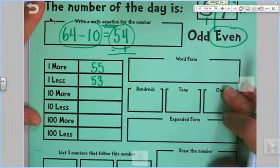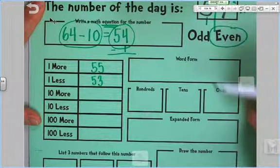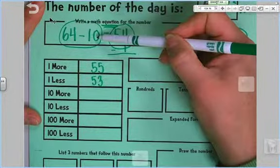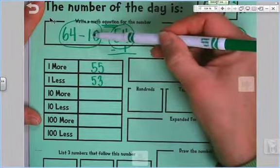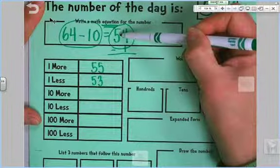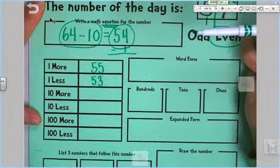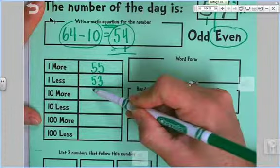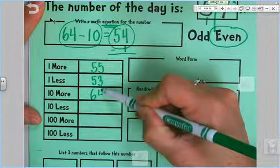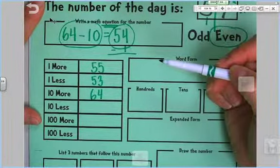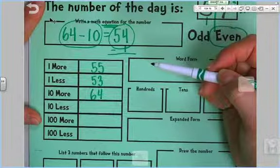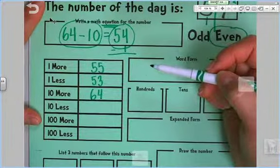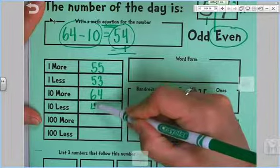Alright, so 10 more. We're going to change the number in the tens place. Didn't we do that when we said 64 was 10 more? And if we took 10 away, we'd end up with 54, right? So 10 more than 54 is 64. And 10 less than 54, well, what's 5 minus 1? 4. So we're going to do 44.